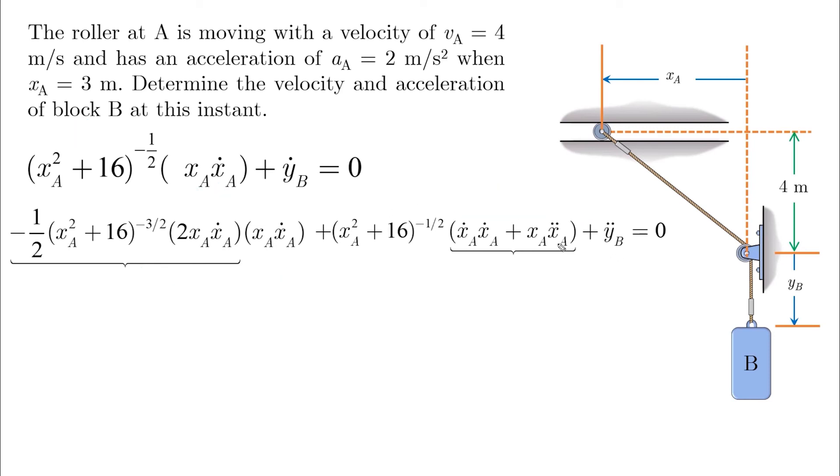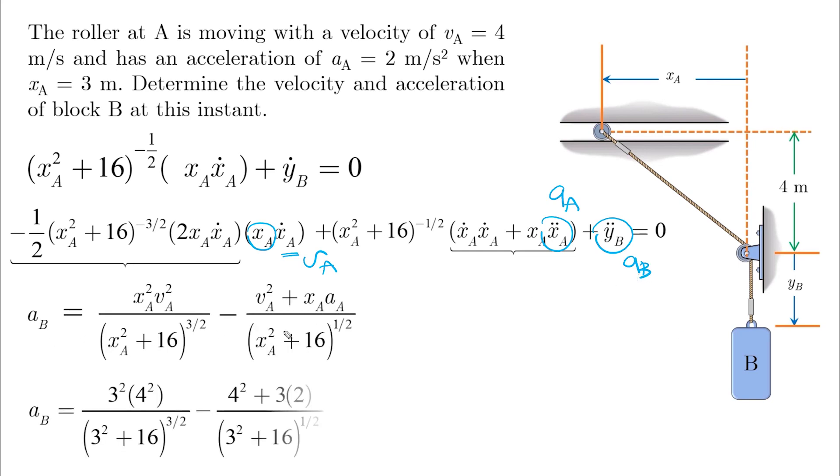We take the first part, which consists of x dot A which is vA and x double dot A which is aA, to one side. The other side will be y double dot B, which is the acceleration aB. By rearranging and substituting, we get minus 3.25 meters per second squared, or 3.25 meters per second squared up because the direction of acceleration is taking positive down.